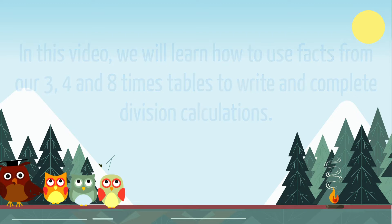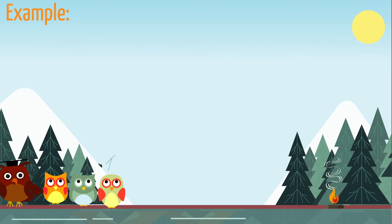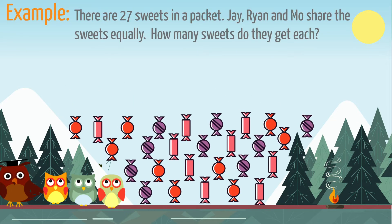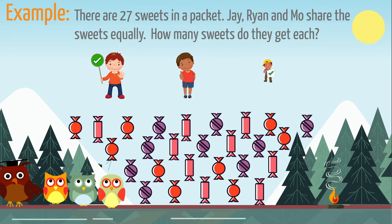Let's look at our first problem. There are 27 sweets in a packet. Jay, Ryan and Mo share the sweets equally. How many sweets do they get each? There are 27 sweets altogether and they are shared equally between 3 children.